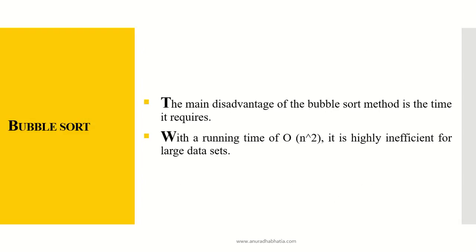The main disadvantage of bubble sort is the time it requires. If the list becomes larger, bubble sort takes a lot of time because we compare each element with every other element in the array. With a running time of O(n²), it is highly inefficient for large data sets — this is the worst-case time complexity.